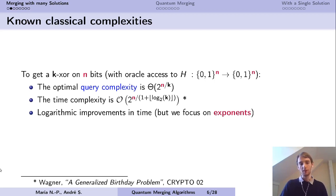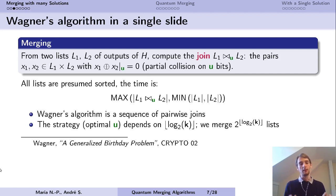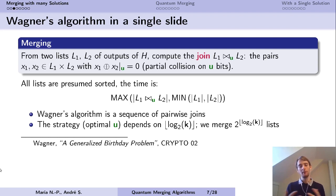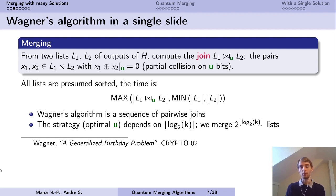Wagner's algorithm works by using this idea of merging — in Wagner's paper this is computing the join operator. If you have two lists containing elements, say outputs of the function h, then it's really efficient to compute the join of these lists: the set of pairs from L1 times L2 that partially collide on the first few bits. It's efficient because you can assume both lists are sorted and go through both at the same time. The time necessary is basically the time to go through the input lists and produce the output list.